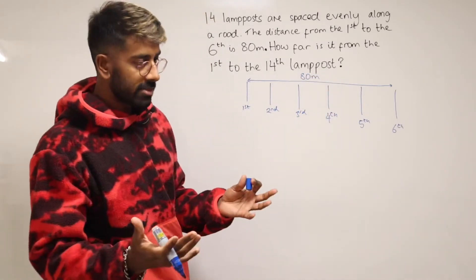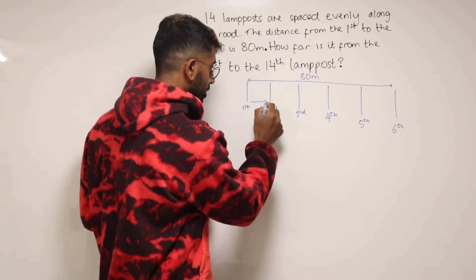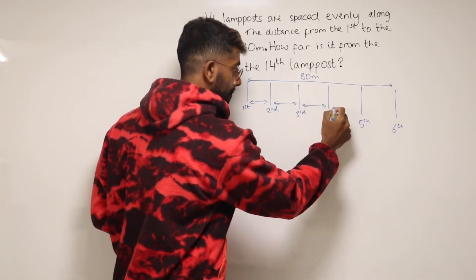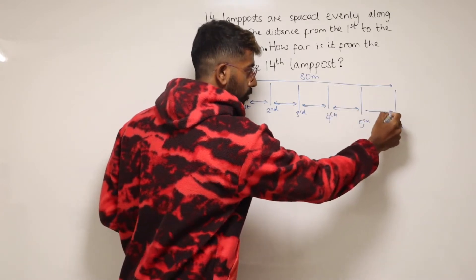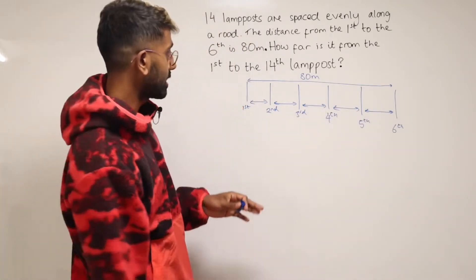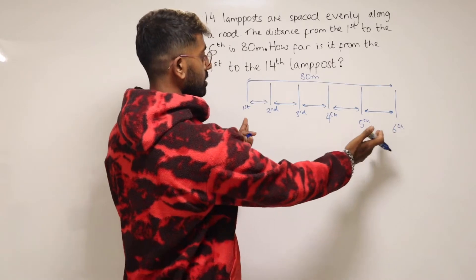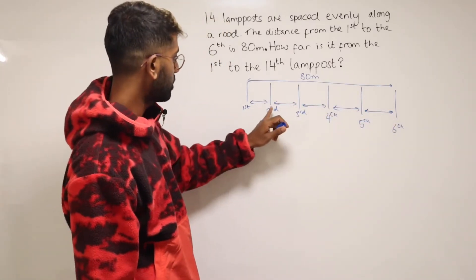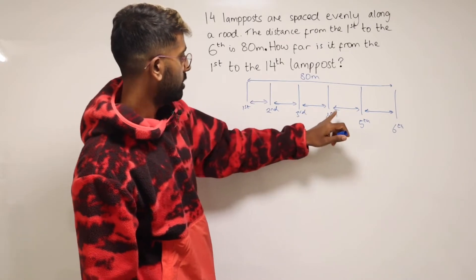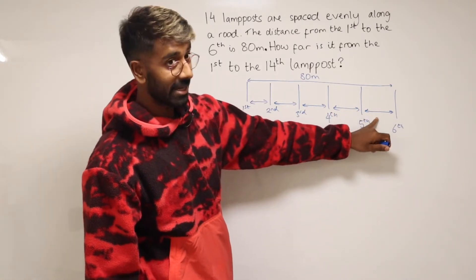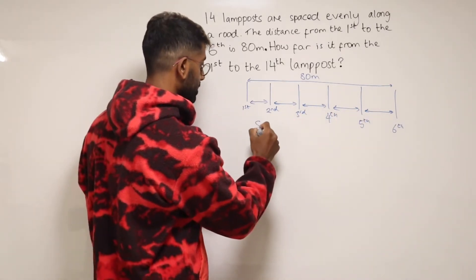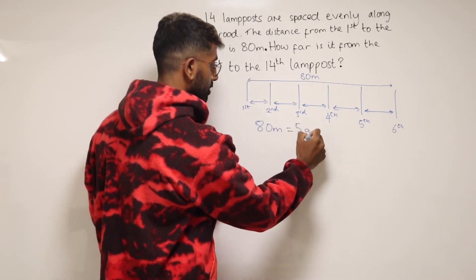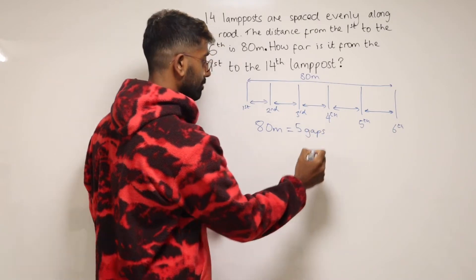So what can we do with this information? We know there are gaps between each of these lampposts, but what we've got to pick up on is that although there are six lampposts, there are not six gaps. If you count the gaps carefully you've got 1, 2, 3, 4 — only 5 gaps. So this 80 metres has 5 gaps.